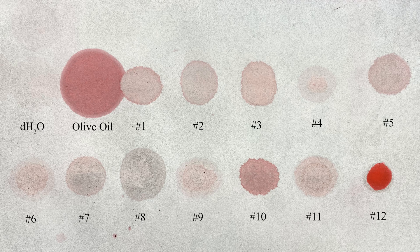In our next lab, we'll analyze the different levels of protein in these same 12 unknown samples. We will use Biuret reagent to assist us in analyzing the levels of protein. I will add a link at the end of this video. If you've enjoyed this video, give it a like and consider subscribing. Until next time.